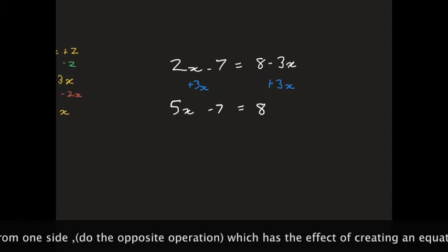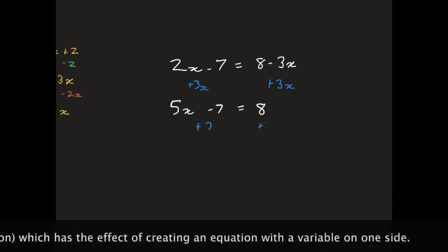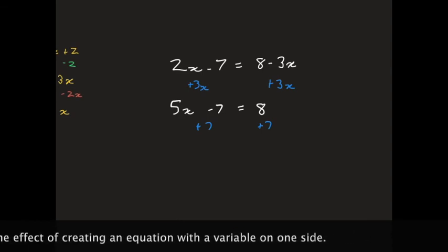So, minus 3x plus 3 equals 0. I have 5x minus 7 equals 8. I am going to add 7 to both sides. So, 5x will end up giving me 15.